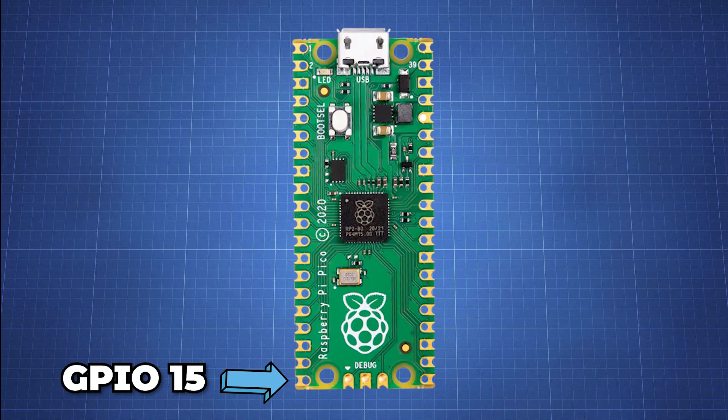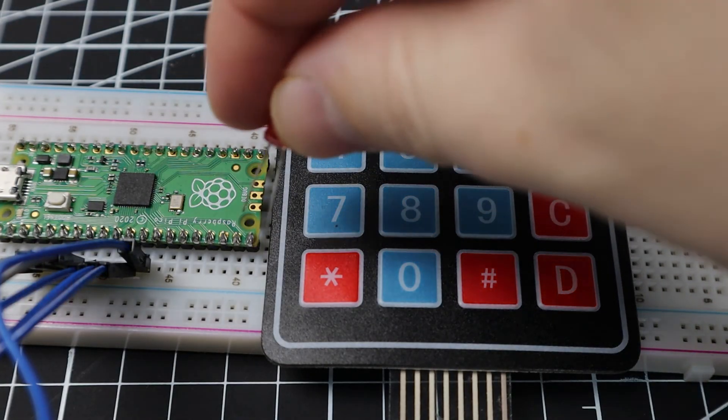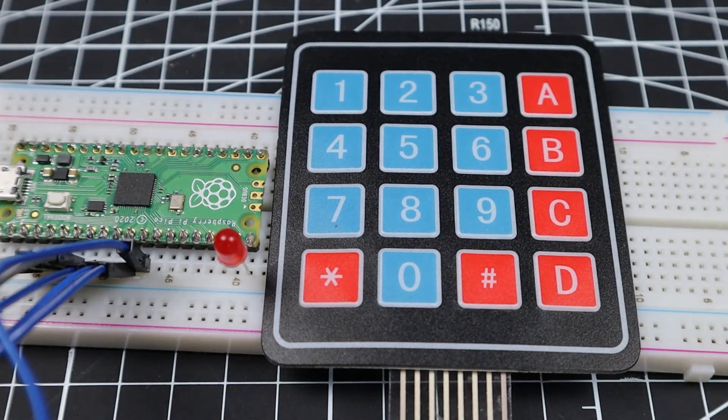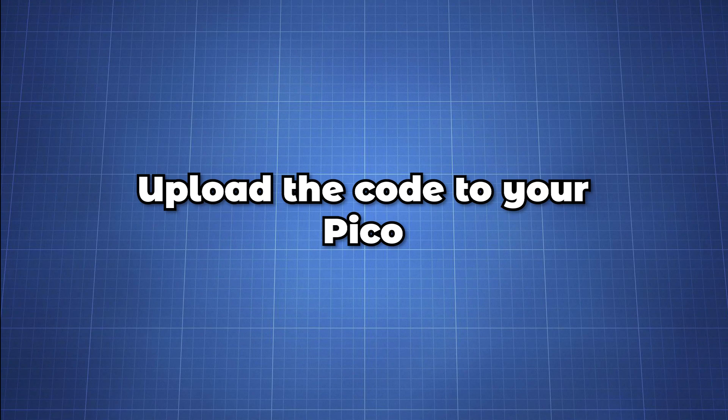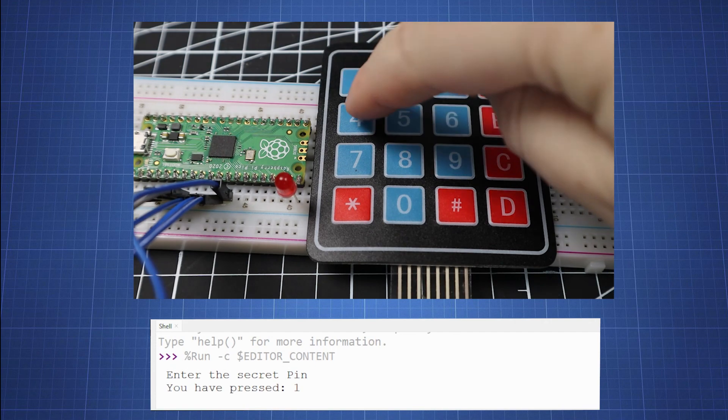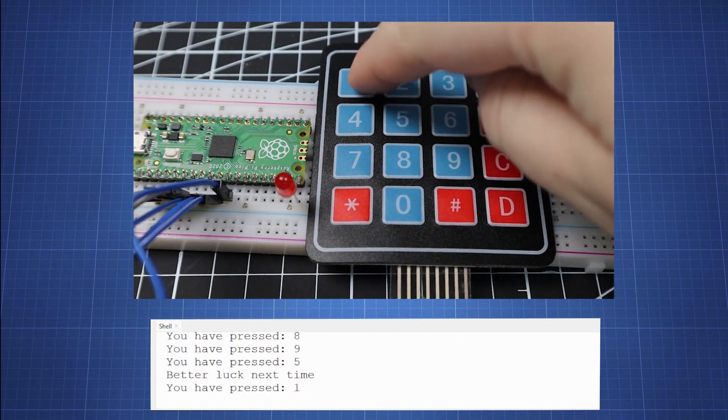GPIO15 is located on pin 20 on the Pico. Make sure to connect the LED the correct way with the long leg going into pin 20 and the short one going to any ground pin and I'm using pin 18 here. Now upload this to your Pico. If I mistype the secret pin it will display better luck next time. Once we enter the secret pin correctly the LED turns on for three seconds.